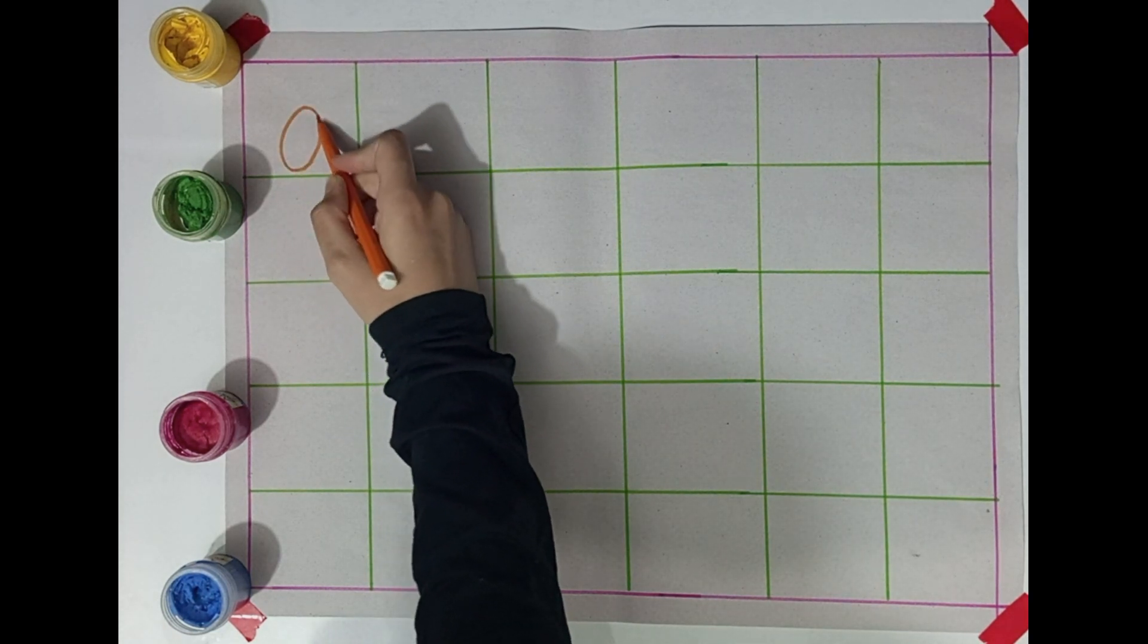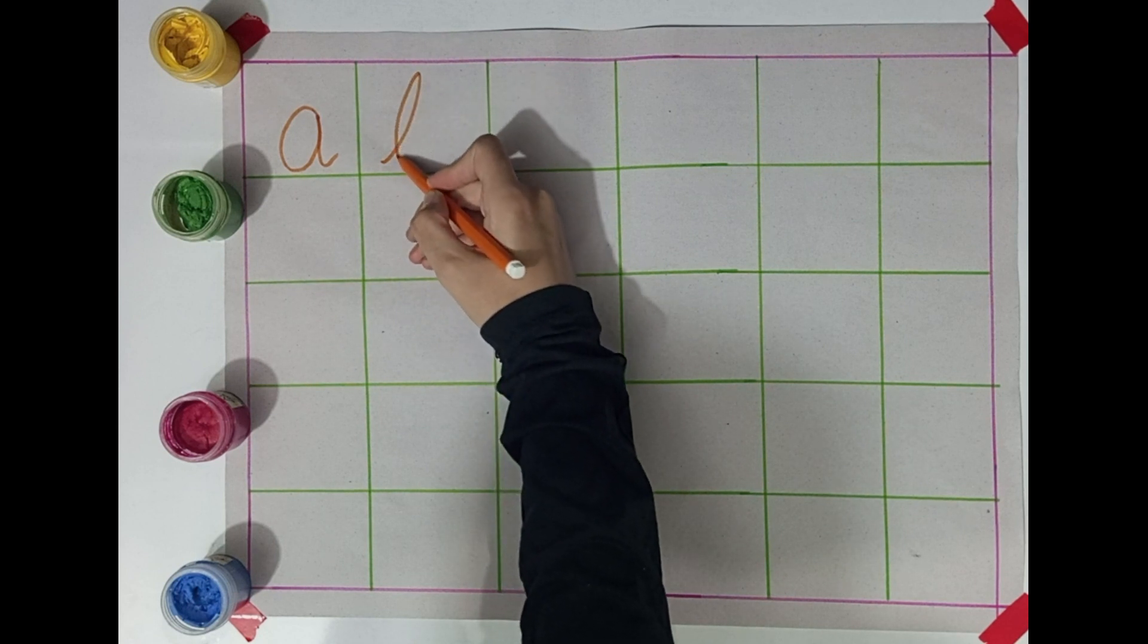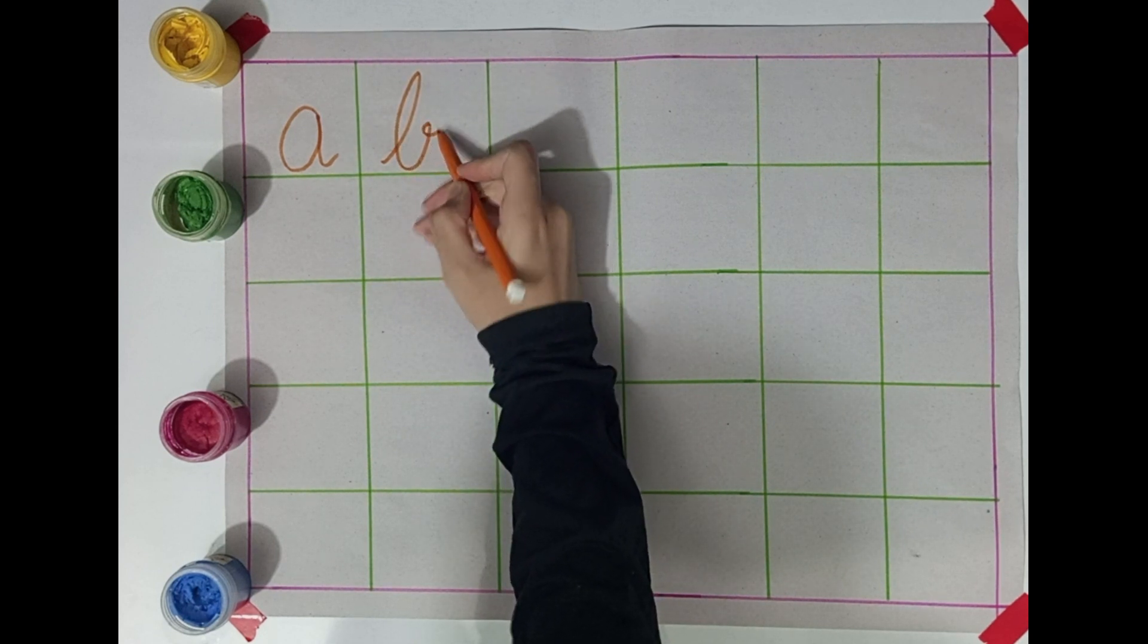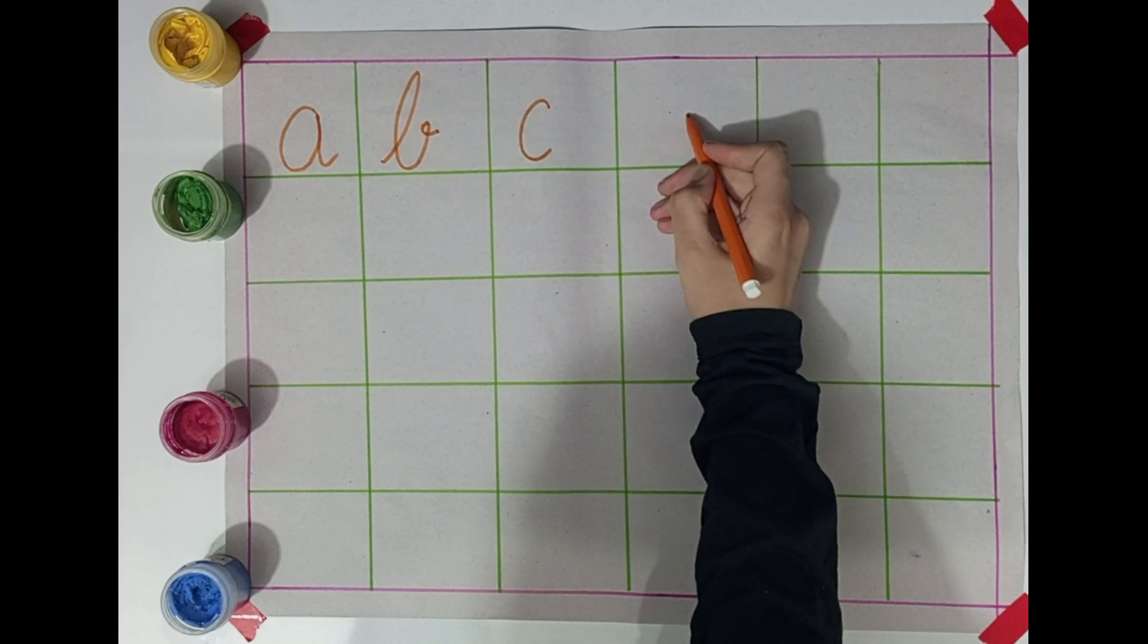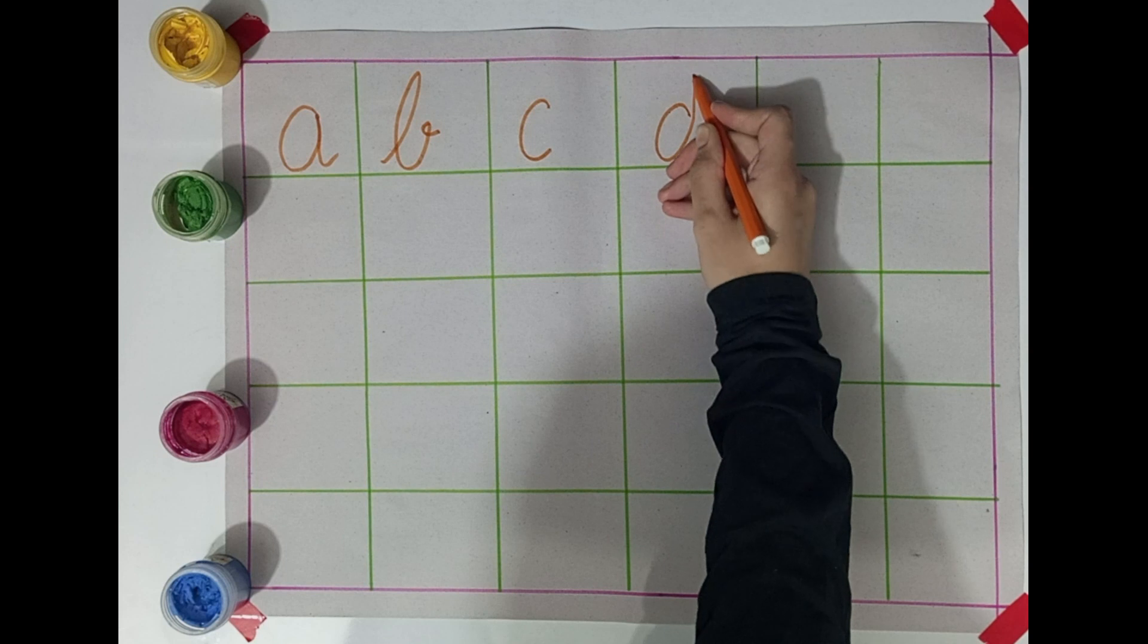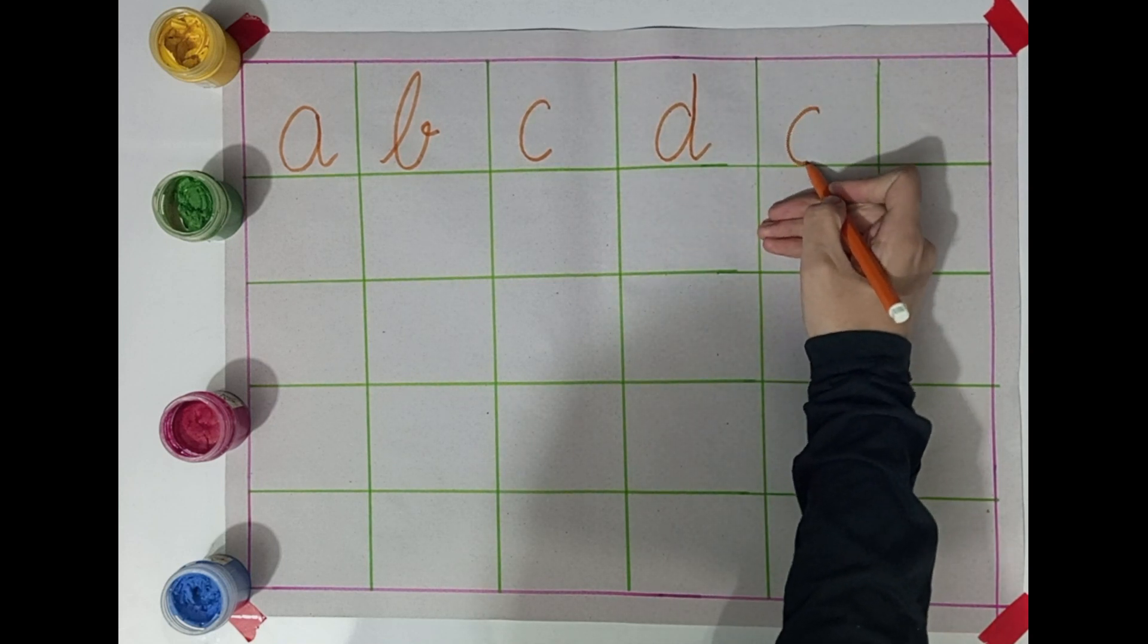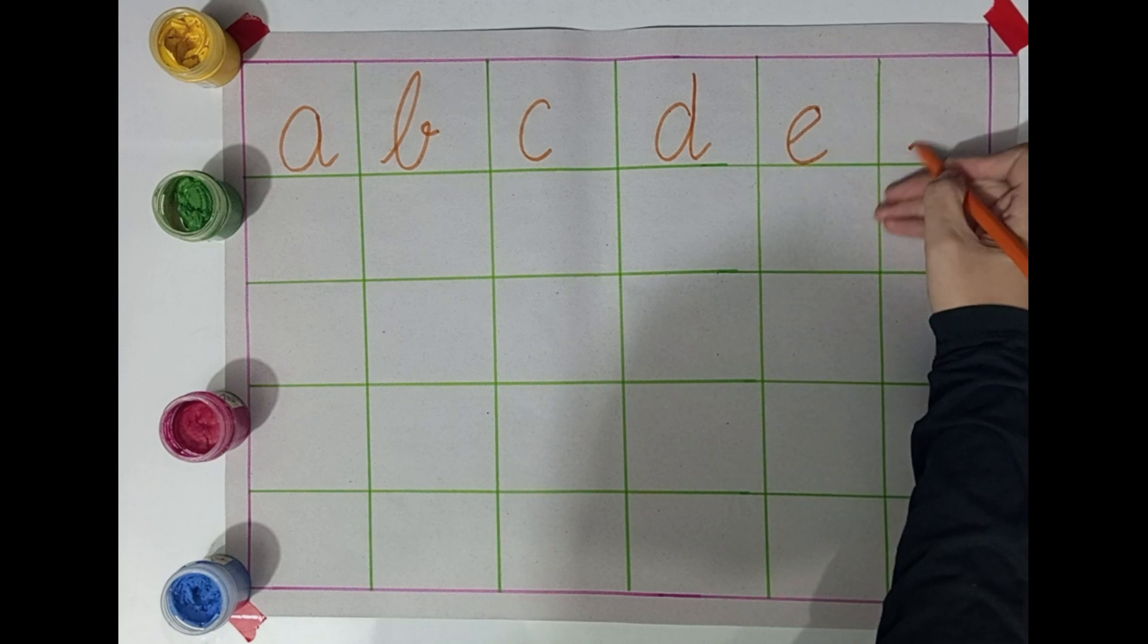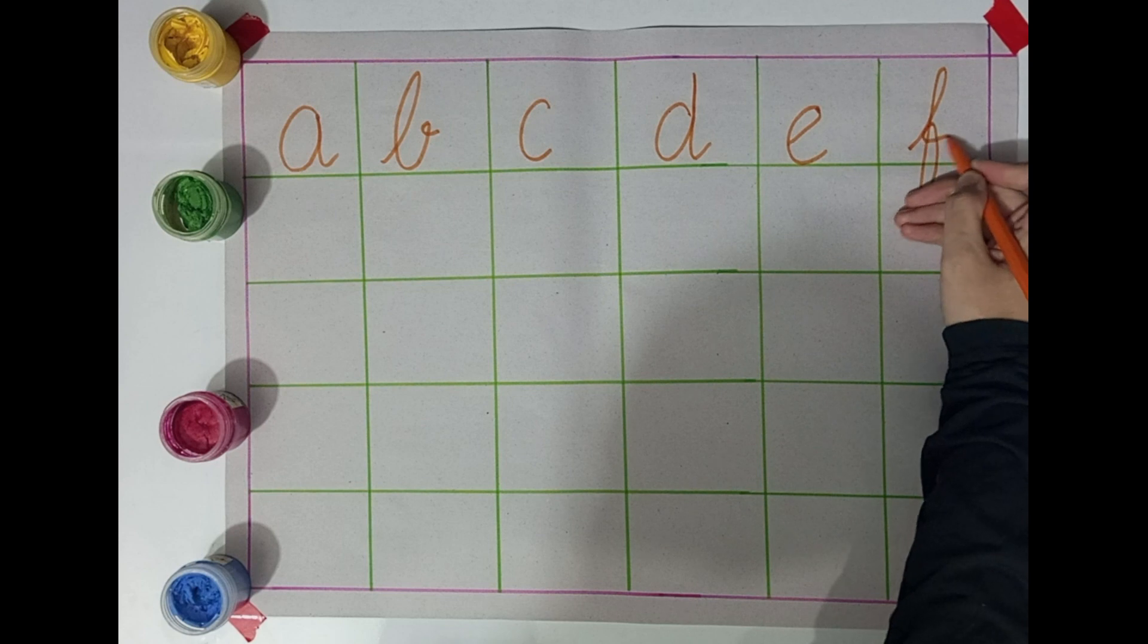A, ant. B, pack. C, cat. D, dog. E, elephant. F, fish.